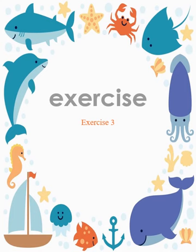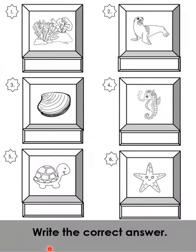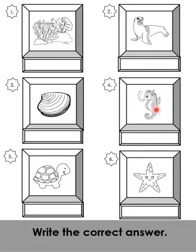Exercise three: write the correct answer. Awak tengok pada gambar ni dan awak masukkan jawapan yang cikgu dah bagi. Ada nama-nama haiwan kat situ. Contohnya, nombor dua: seal. Number three: clam. Number four: seahorse. Number five: turtle. Number six: starfish.